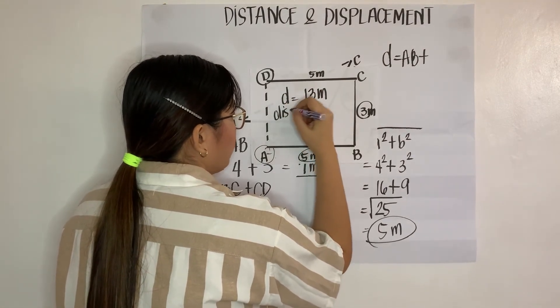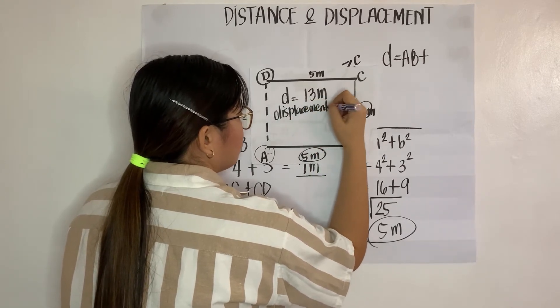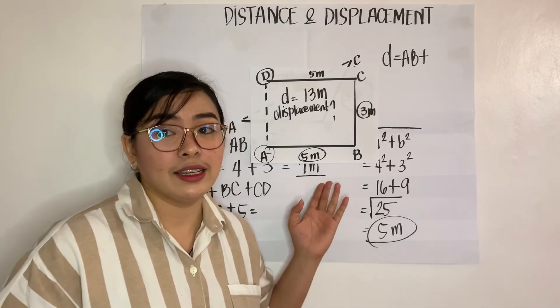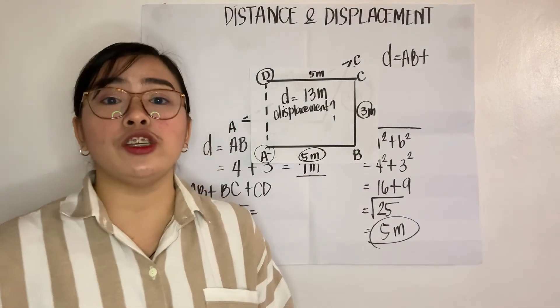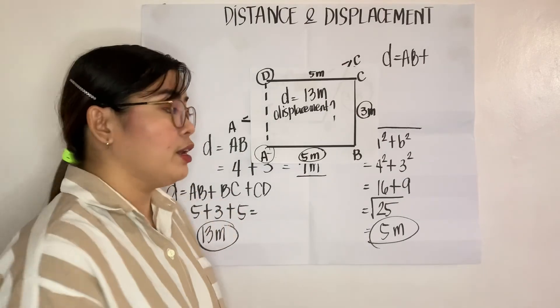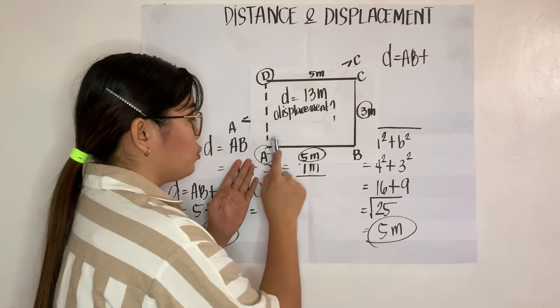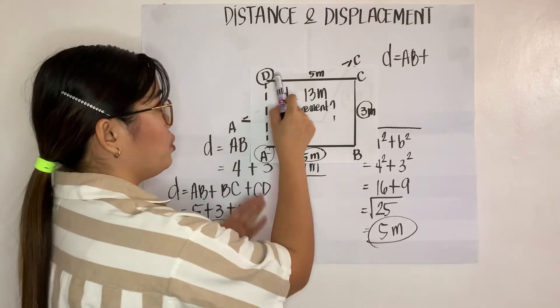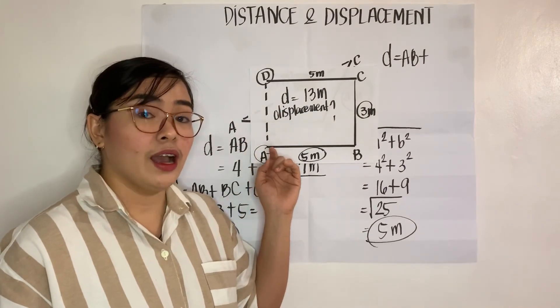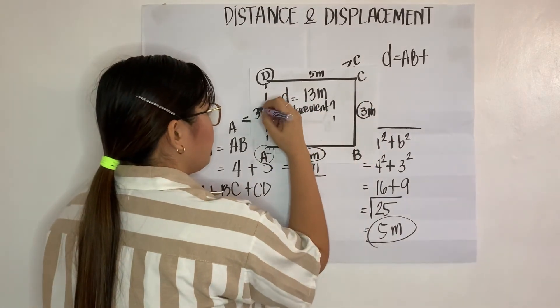How about the displacement? Okay. What is displacement again? Very good. It is the shortest distance between the initial point to your final point. Now, in this example, your initial point will be this one, and then the final point will be this one. So, what is your displacement? Correct.